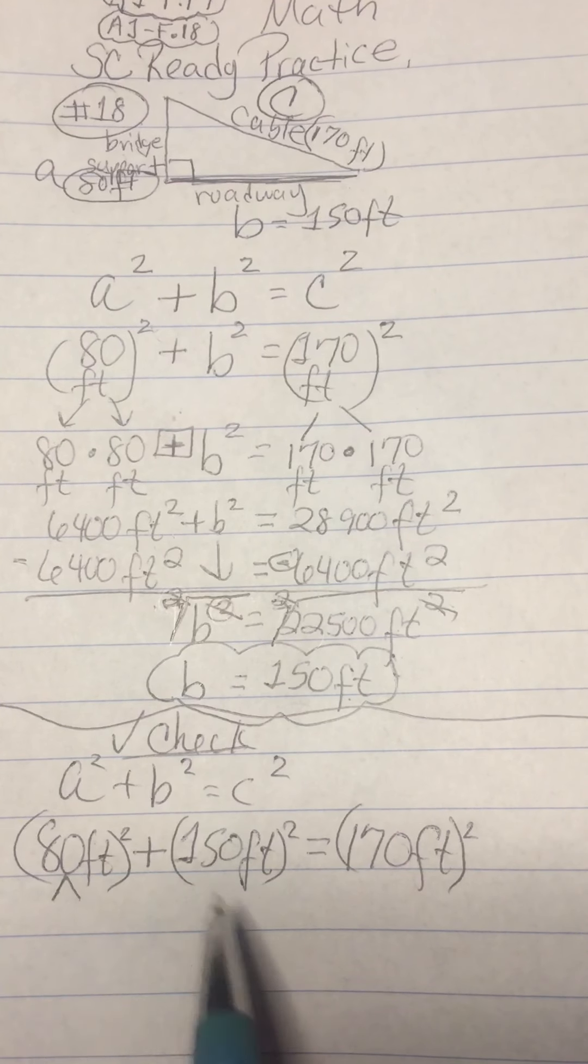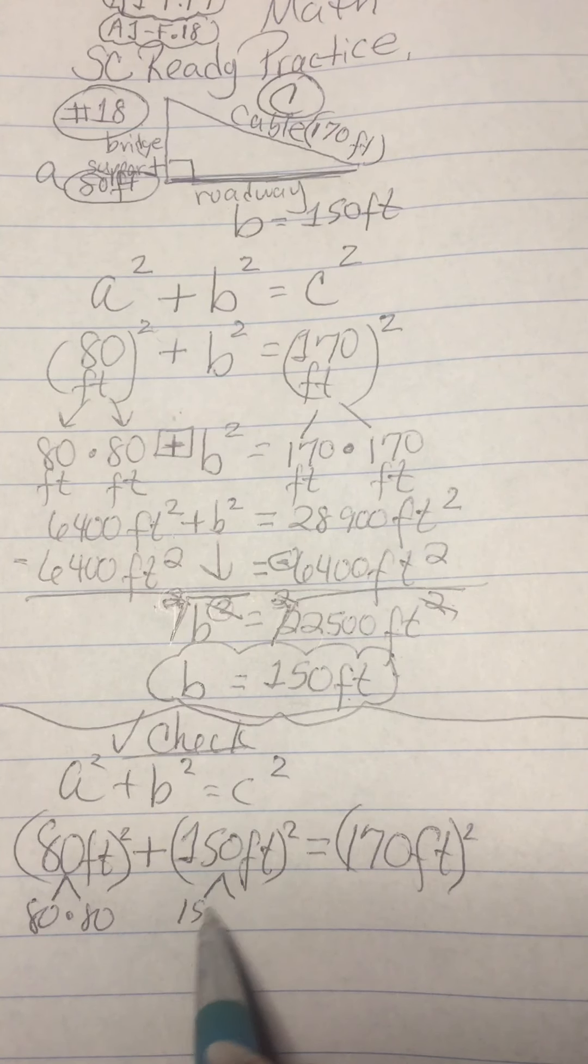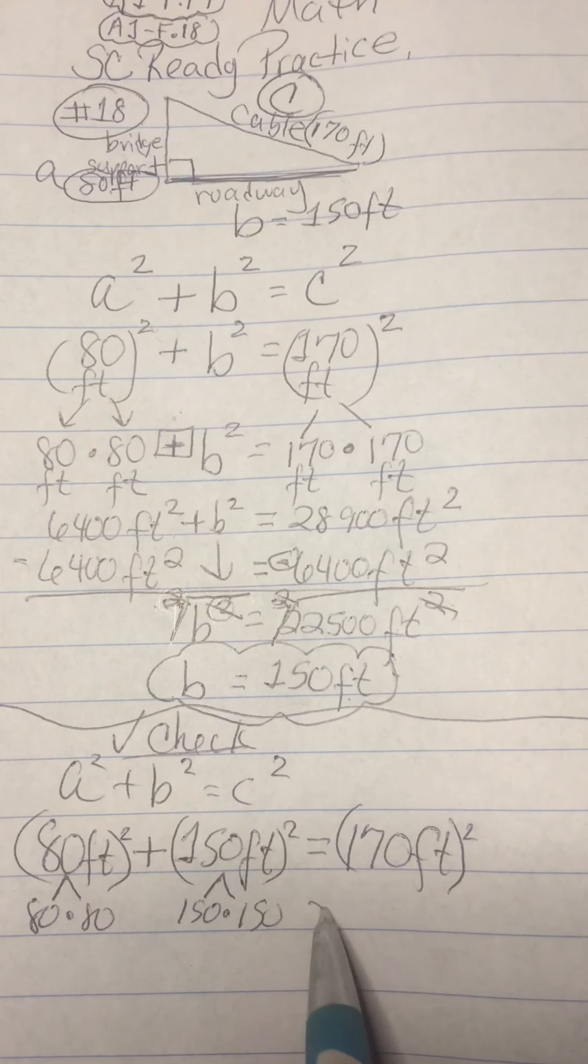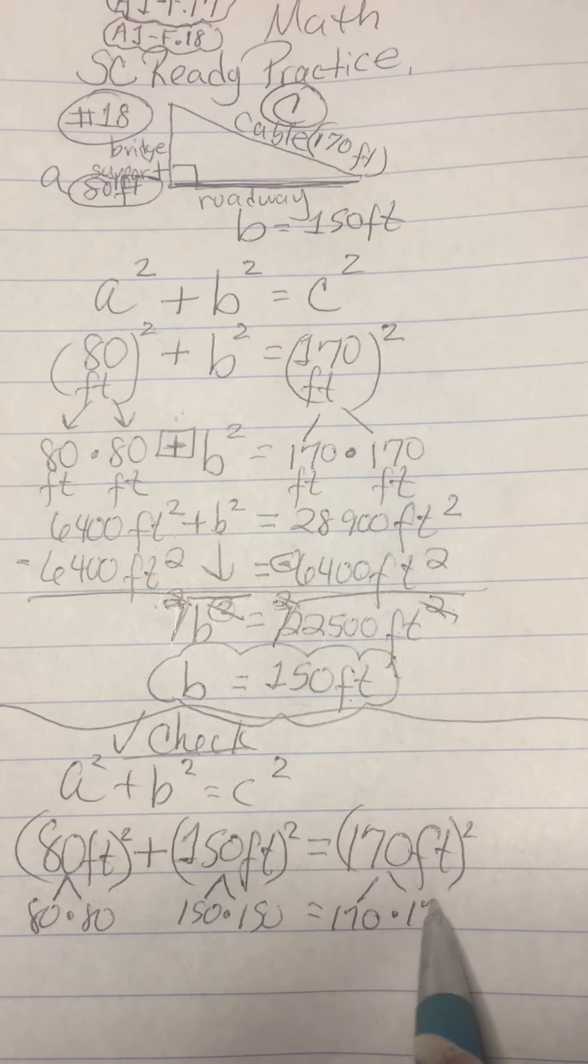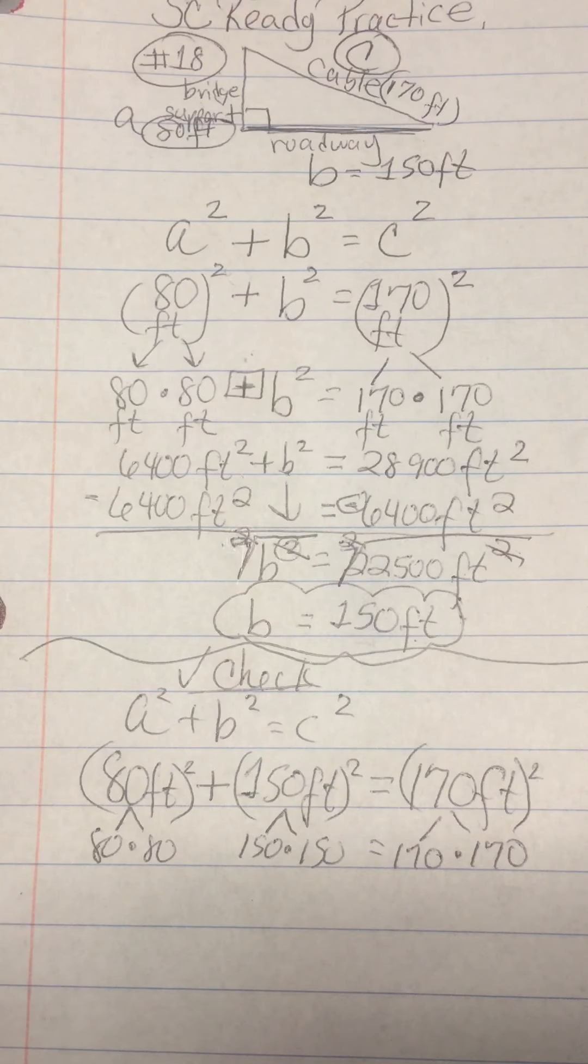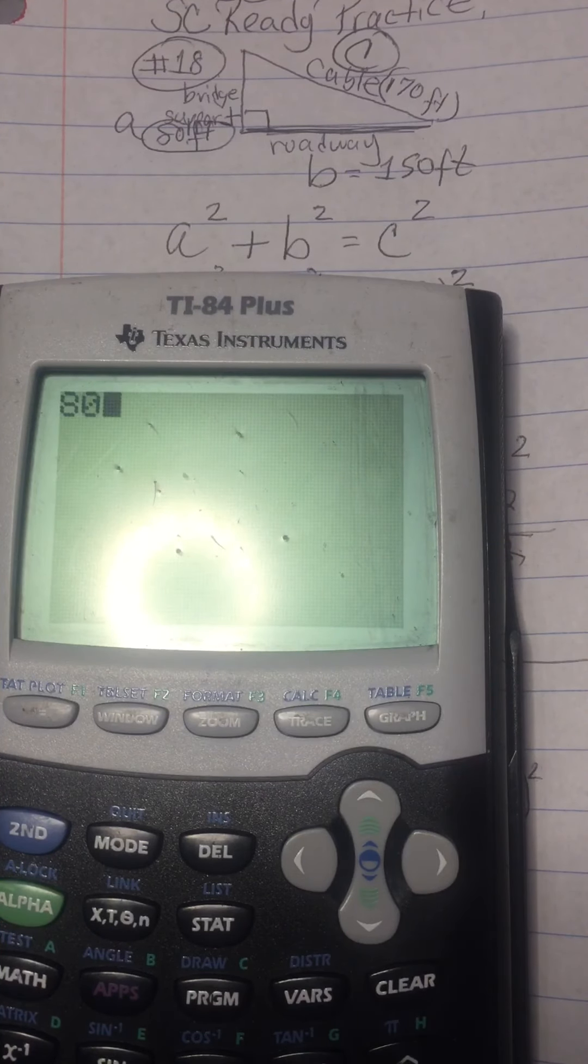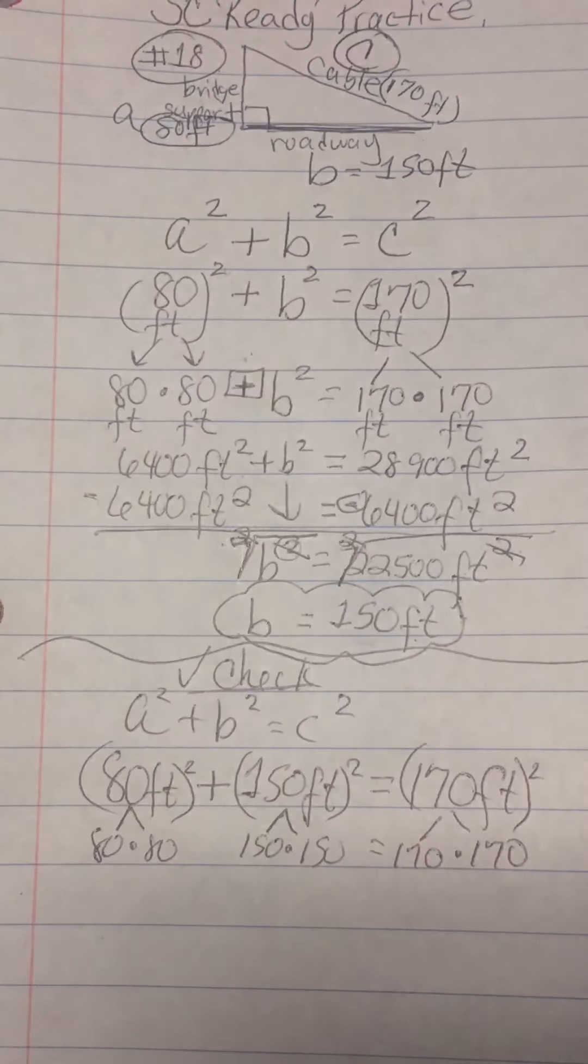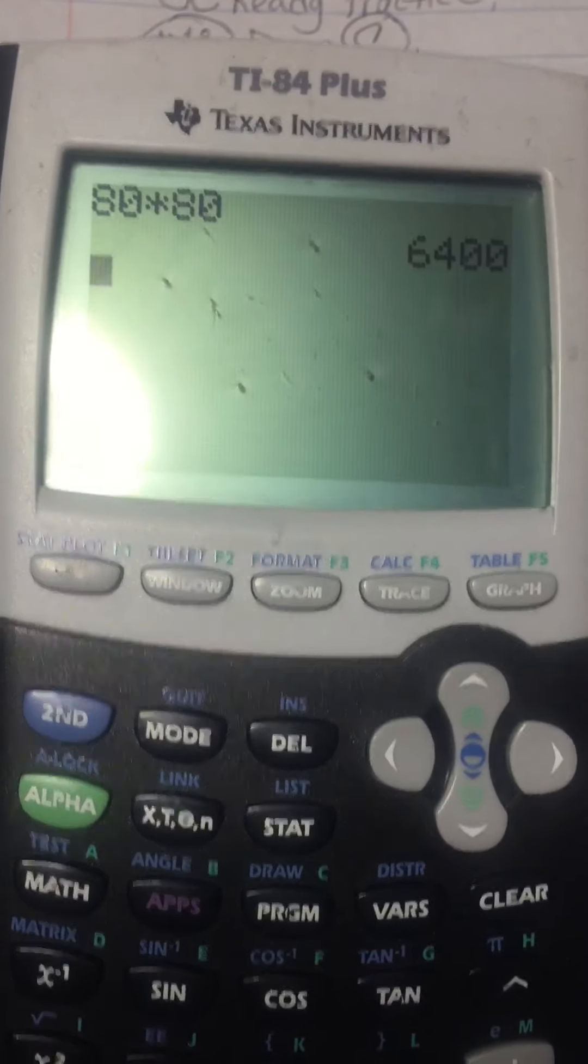So again, we're going to do 80 times 80, 150 times 150, and 170 times 170, and see if our numbers come out correctly. So I'm going to take the calculator. I'm going to do 80 times 80, which is 6,400, plus, don't forget your plus sign, 150 times 150, which is 22,500.